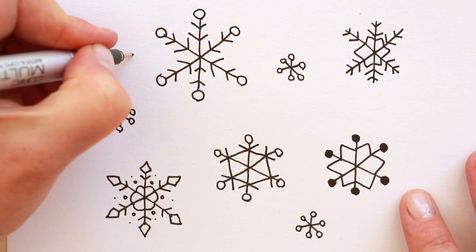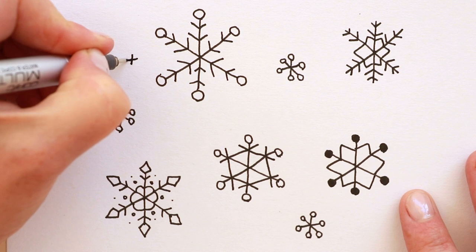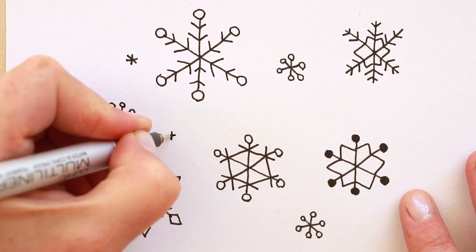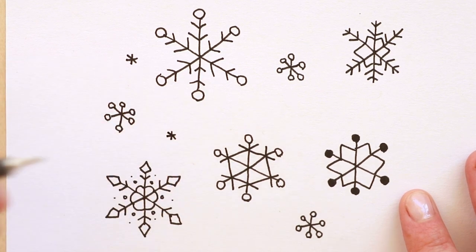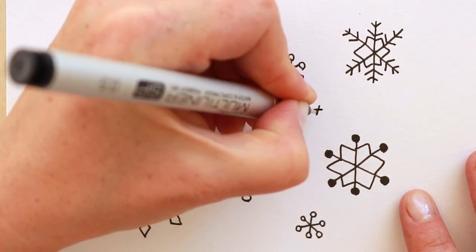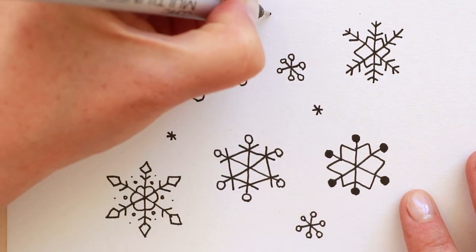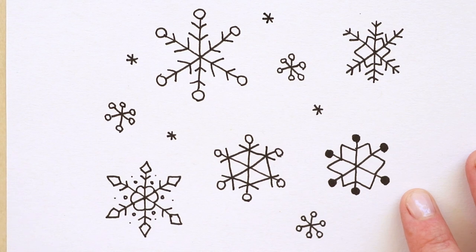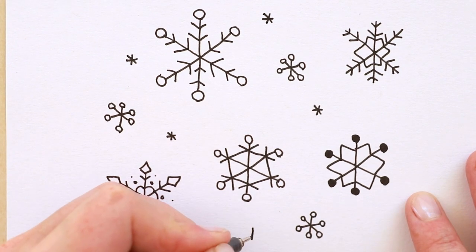And then you can even do simpler ones. Look just a little six pointed snowflake. So notice how I'm getting smaller and smaller and smaller with my decorative elements. And that's how you do the design. Start with big, place your big shapes and then add the small shapes.